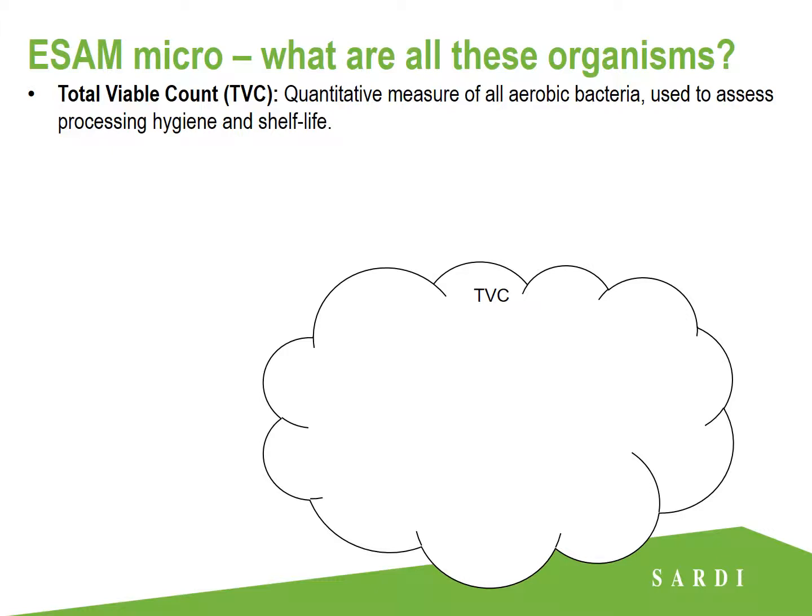First of all, we have our total viable count, which is a measure of all different types of aerobic bacteria. This bacteria could have originated from a number of sources, including animal hides, plant equipment, hands, or even just from the air. And for this reason, we expect to almost always get a count from our ESAM samples for TVC. TVC gives us no indication of the specific types of bacteria present, but it is used as a general indicator to assess processing hygiene and shelf life.